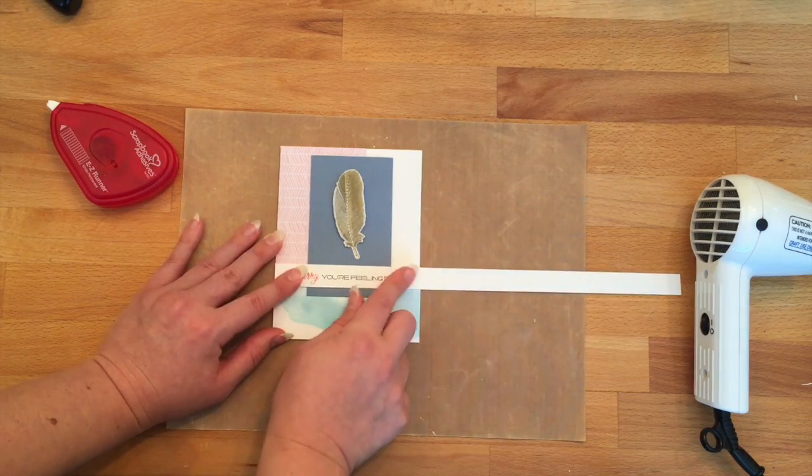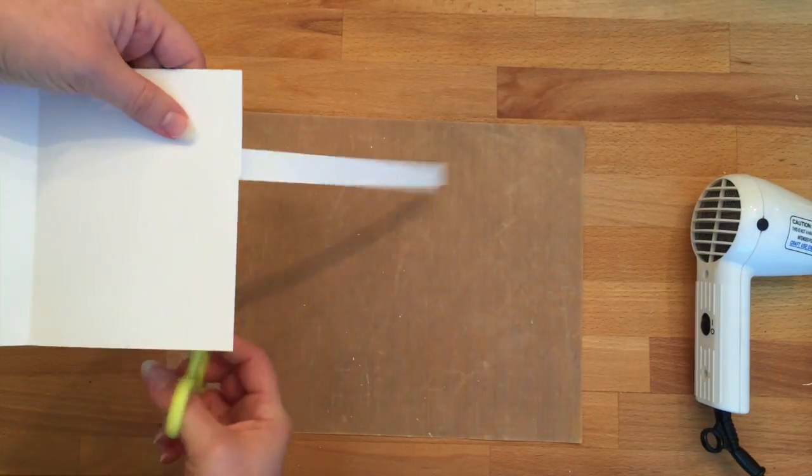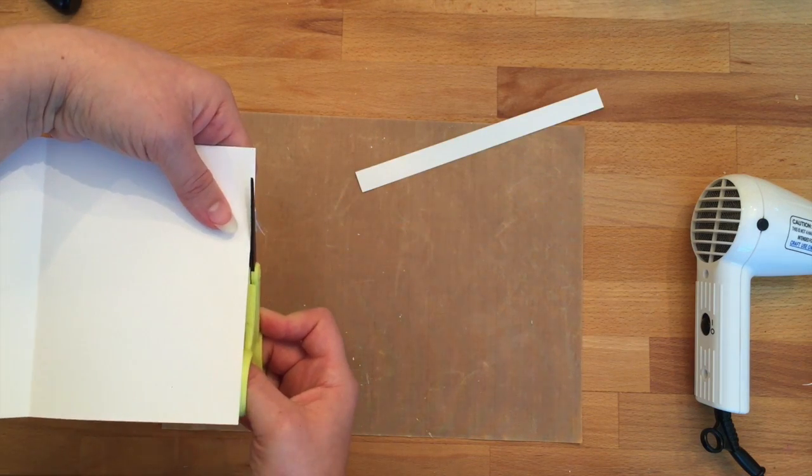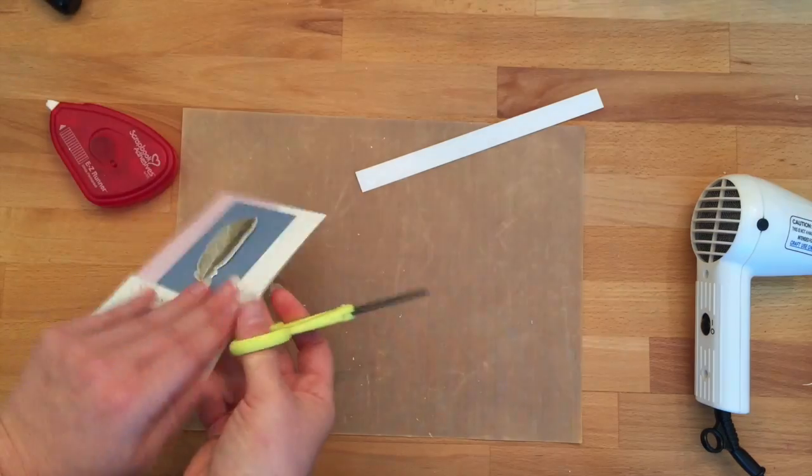Given that that strip is a little bit long, we're going to trim it. So I just opened up the card and went ahead with my scissors, and using the card line as my cutting line, I just trimmed that off.